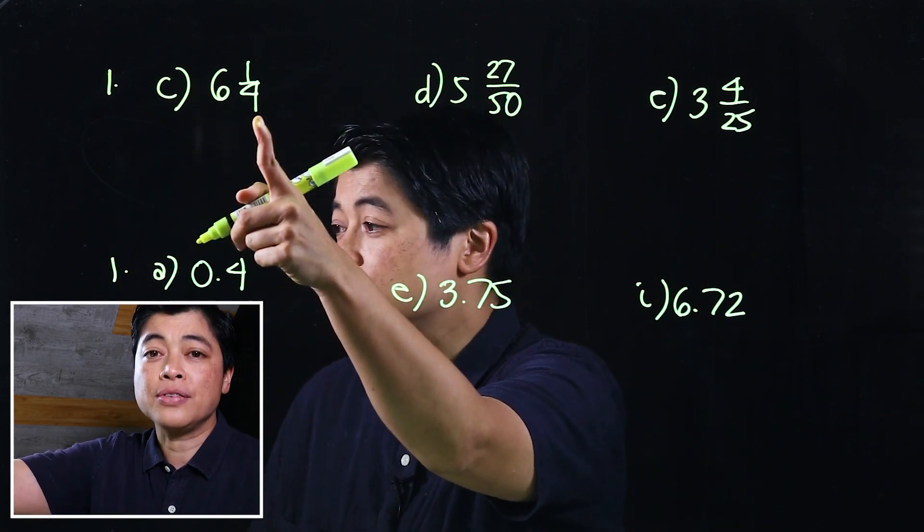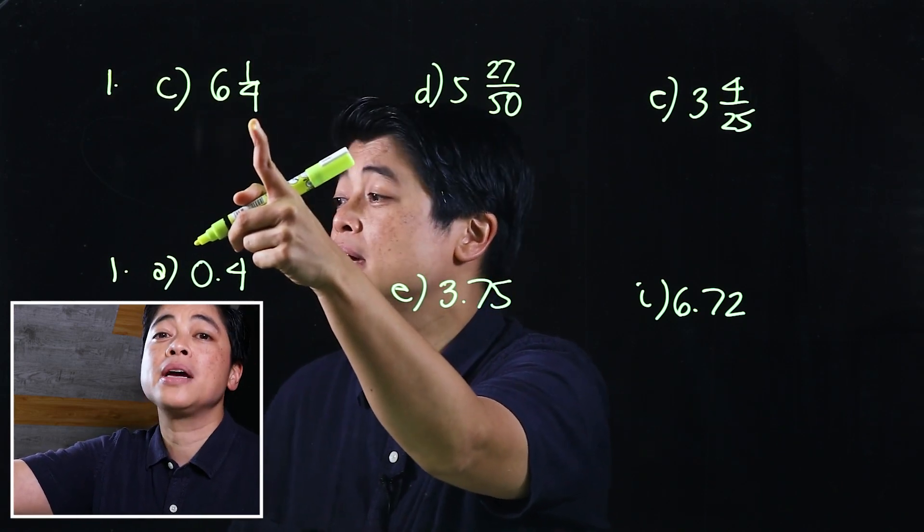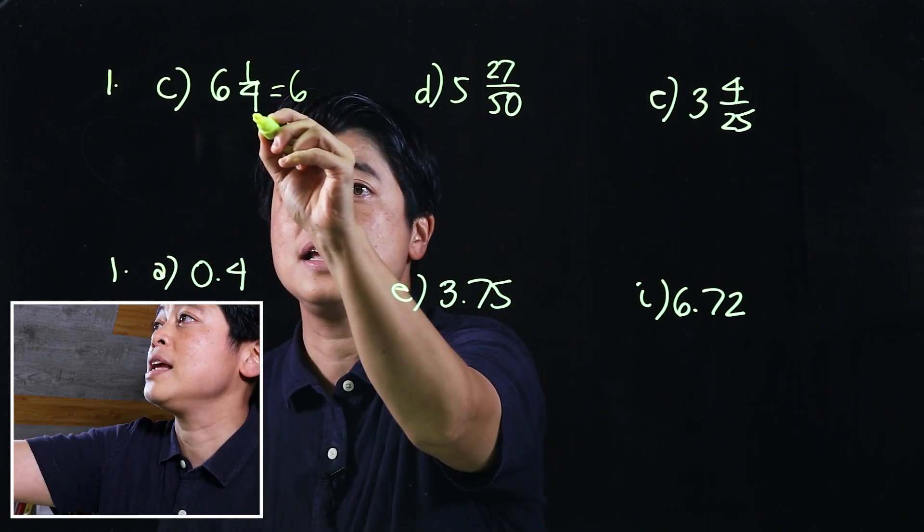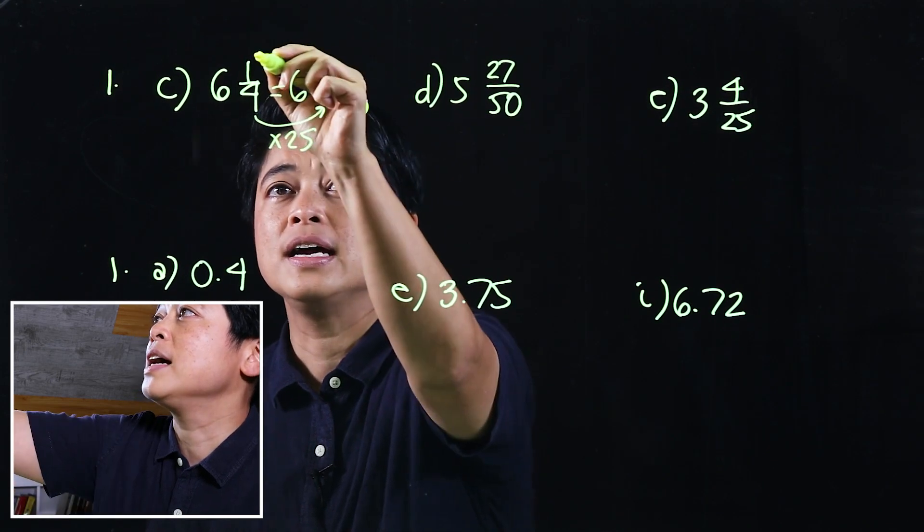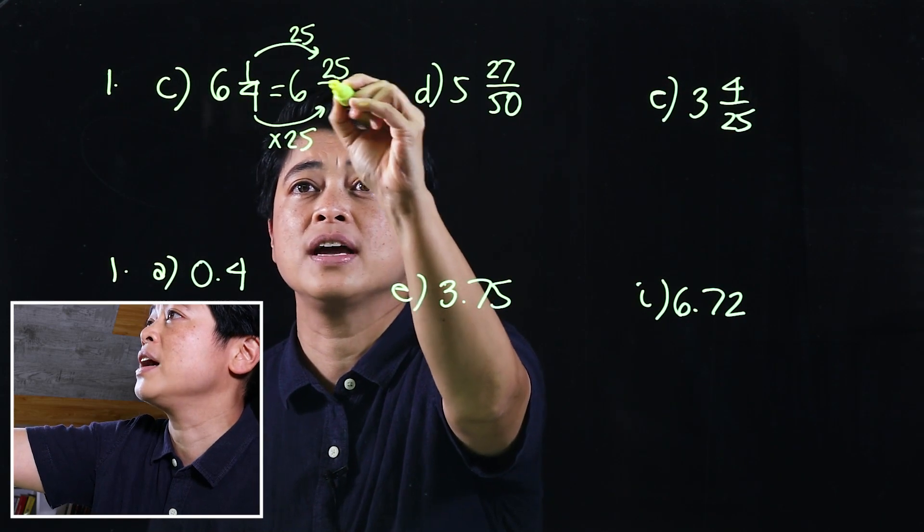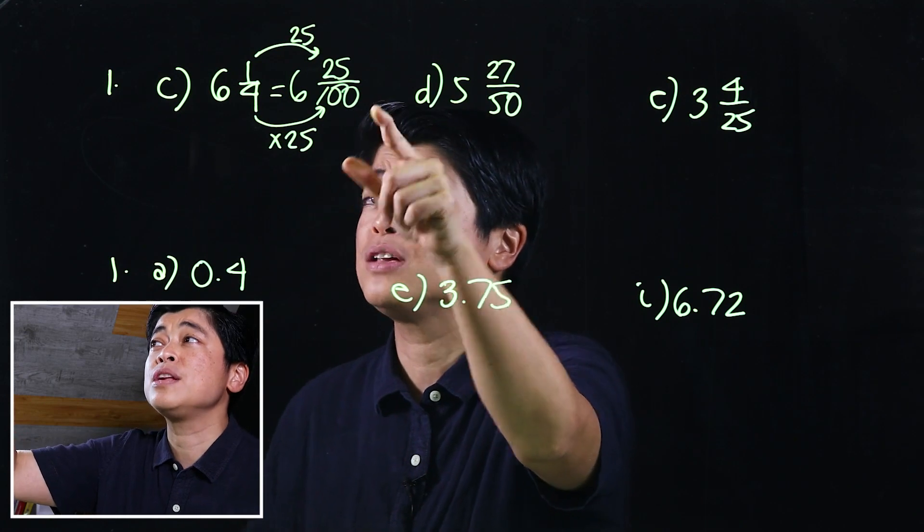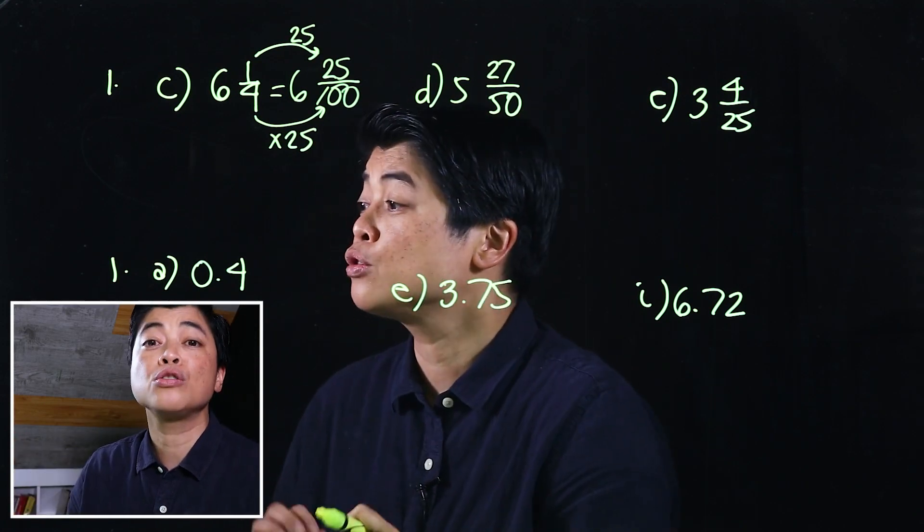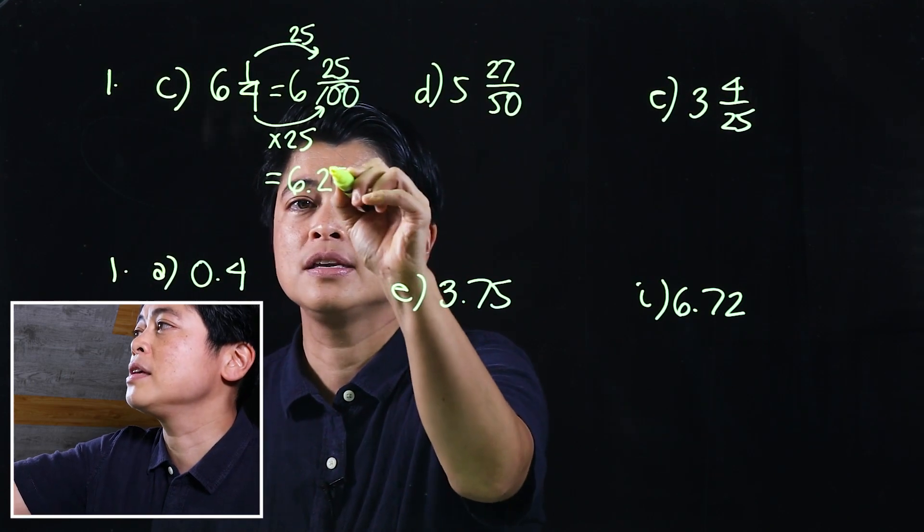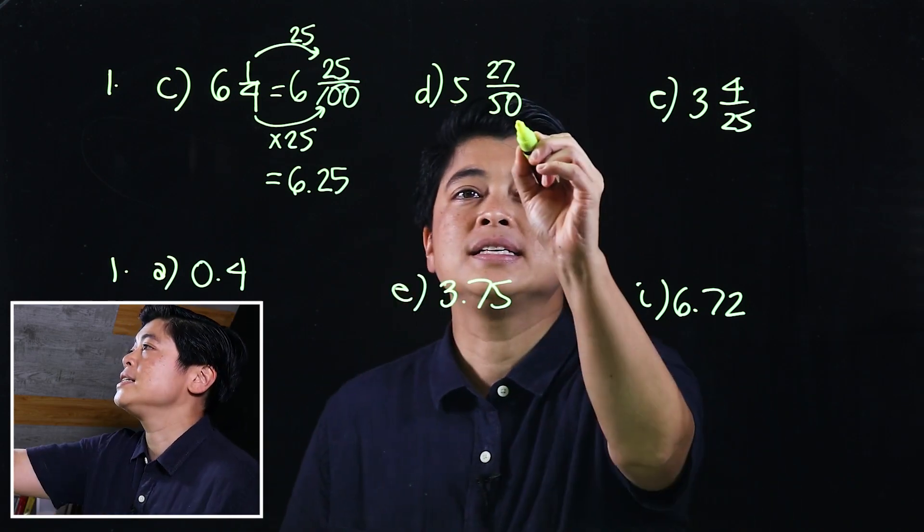Clearly I can make 4 become 100 by multiplying it by 25. If I multiply by 25, I need to multiply the top by 25 as well, so that means that's 25 over 100. Since it's over 100, we need to move the decimal place two places to the left, which means this must be 6.25.